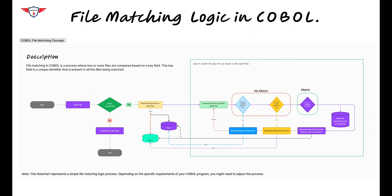Apart from that, if you encounter an end-of-file condition for any of the files, then either you should stop the processing of the program, or you can write all the remaining records from the other file into a non-match file, or you can skip those records because they fall in the category of non-match records. Before we deep dive into our sample COBOL program, I would like to mention that this flowchart represents a simple file matching logic process. Depending on specific requirements, you might need to handle errors or exceptions, or perform additional processing on the records. But this flowchart should be a good starting point for understanding file matching logic in COBOL.